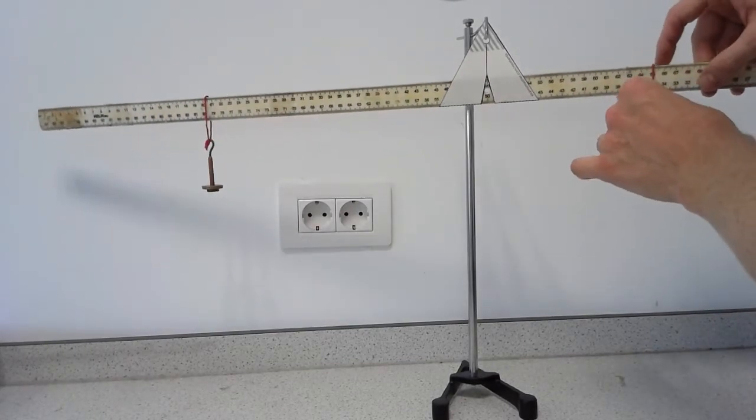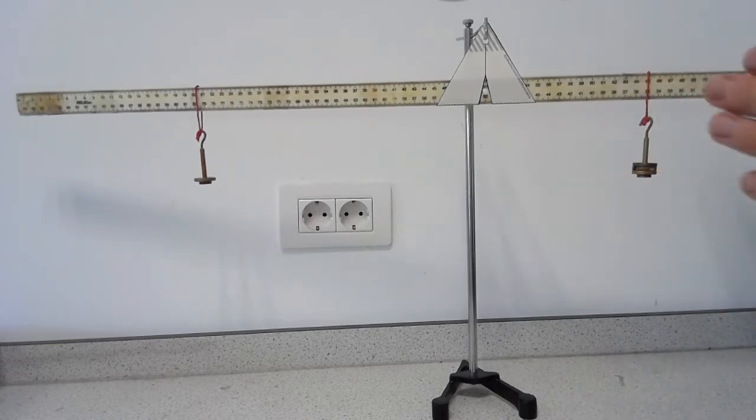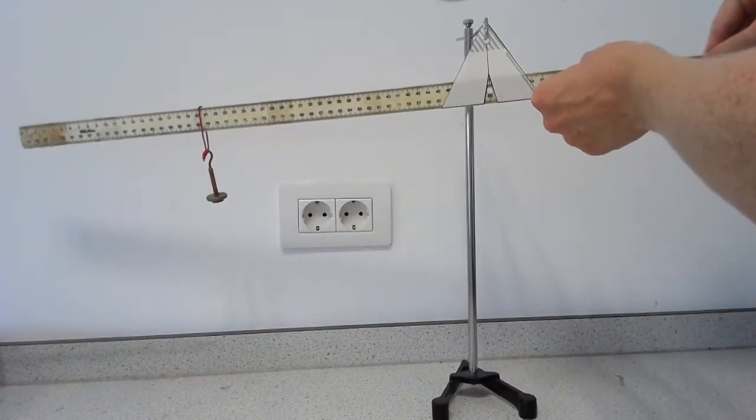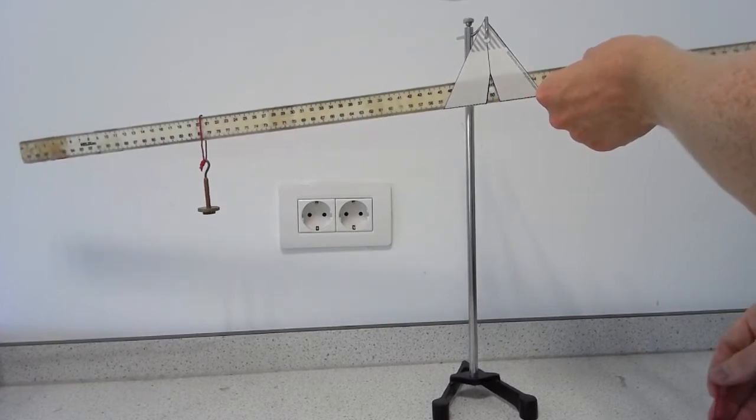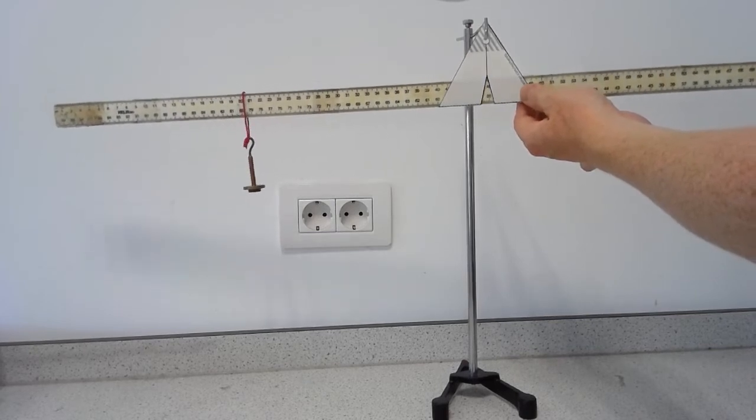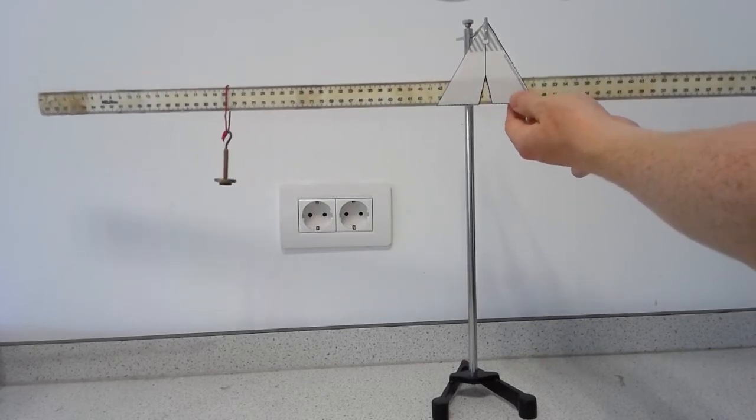Or alternatively, you could be trying to balance it with only one weight, in which case you're going to move the ruler through the support until you get it to balance horizontally again.